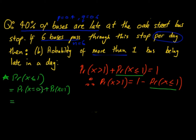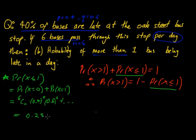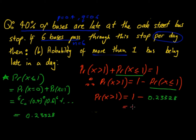Substituting into the formula for X = 0: 6C0 times 0.4 to the power of 0 times 0.6 to the power of 6, plus the term for X = 1. That gives us P(X ≤ 1) = 0.23328. So P(X > 1) = 1 minus 0.23328, which gives 0.76672.